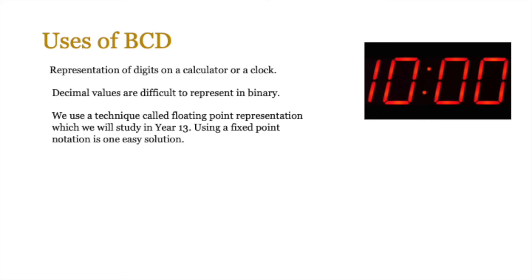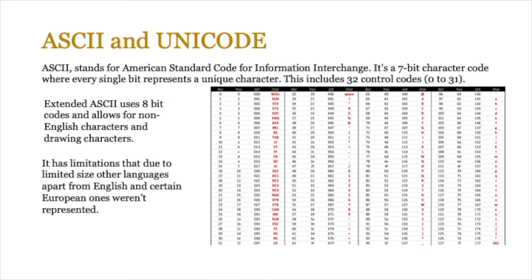The uses of binary coded decimals include representing digits on a calculator or clock, because decimal values are difficult to represent in binary. This links to floating point representation, covered in Year 13. For now, we use fixed-point notation, where every digit is fixed — a simpler solution. So that covers numbers; now let's look at text and special characters.